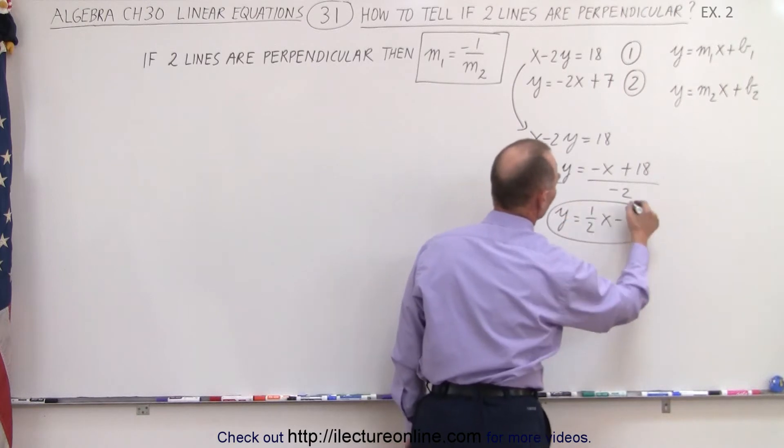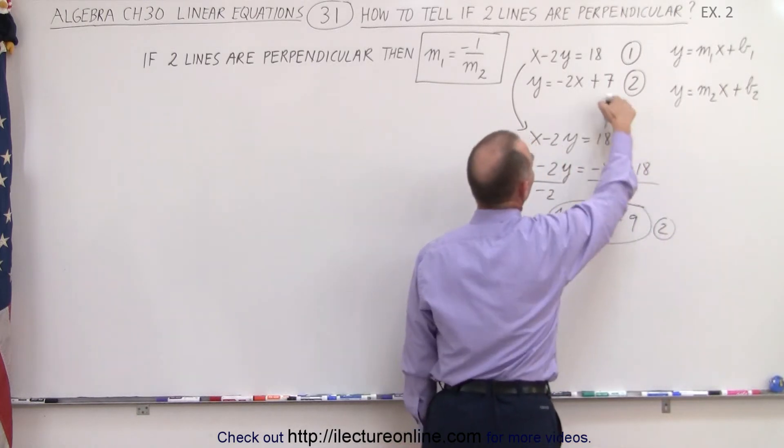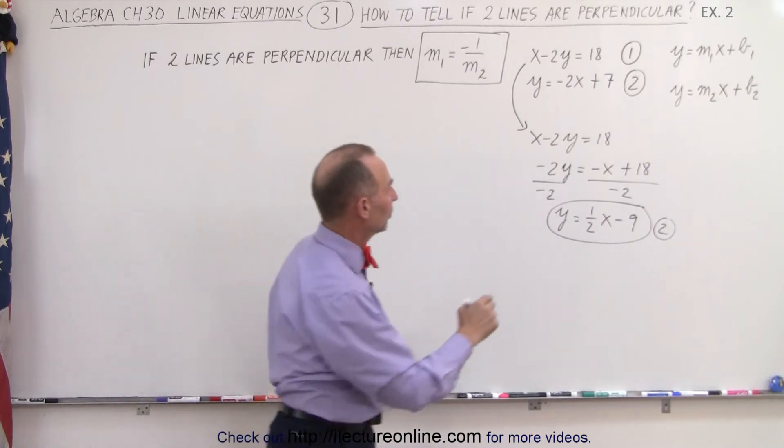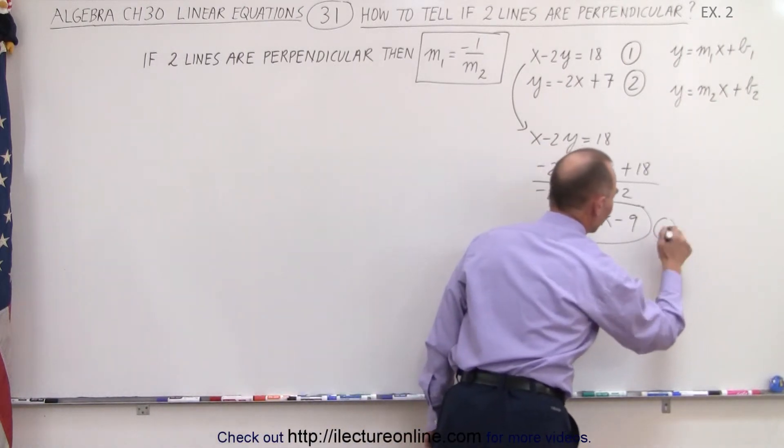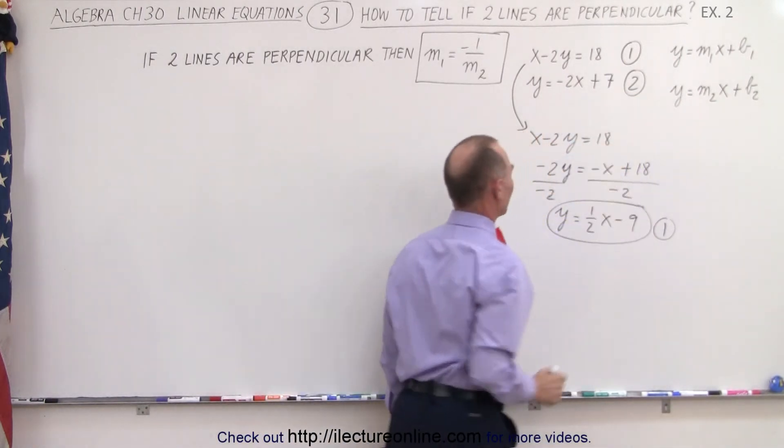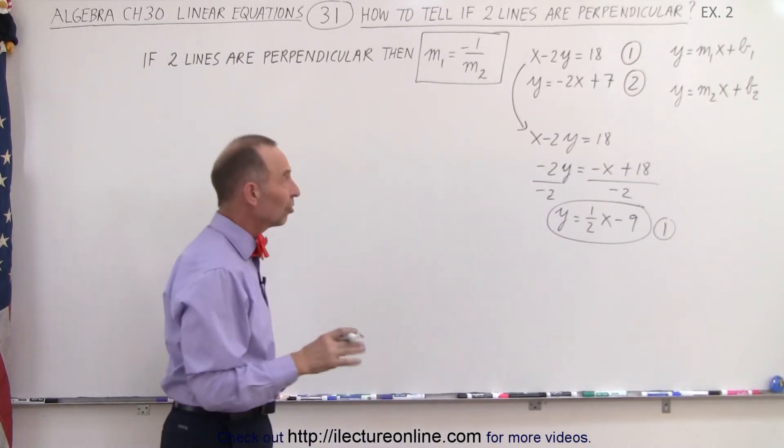This becomes a negative and a negative. That becomes a positive one-half x and minus 9. So there's the second equation. There's equation number two, and there's equation number one. Oh, nope, I'll take that back. This was equation number one, and there's equation number two. Now they're both in the slope-intercept form.